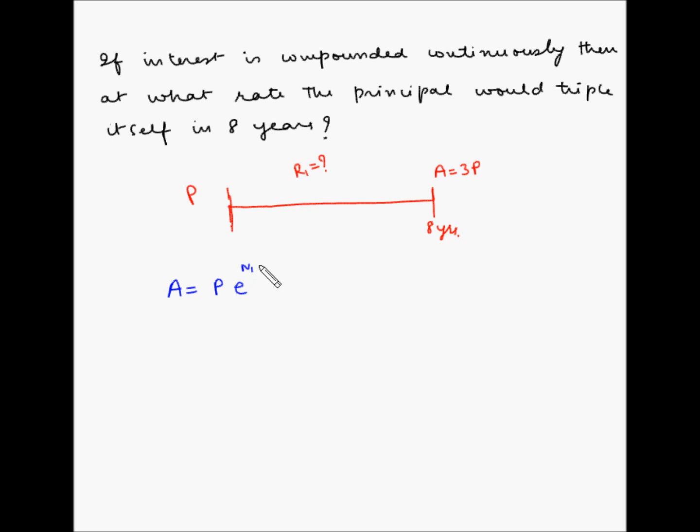n1 is the number of years and R1 is the rate of interest per year. So amount is equal to three times principal, so 3P is equal to P times e equals 2.71828, and n1 is 8 years, so 8 multiplied by R1 divided by 100.